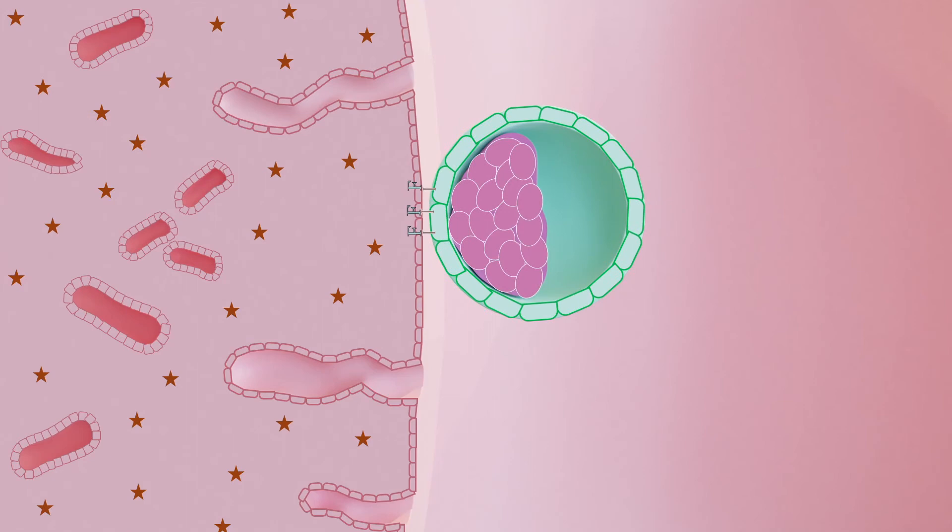Now this embryo binds tightly with the help of fibronectin and integrin relationship. Now the cells that are close to the endometrium arrange themselves in a specialized way. They lose their cell membrane and form a syncytium. And now it is called syncytiotrophoblast.